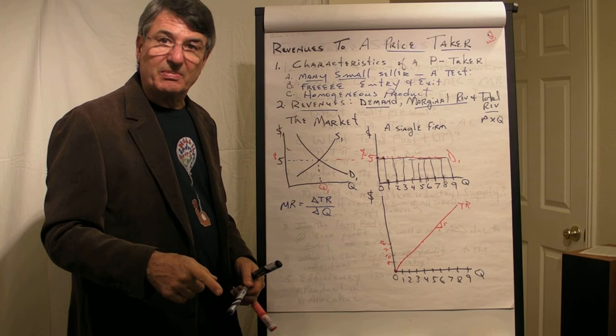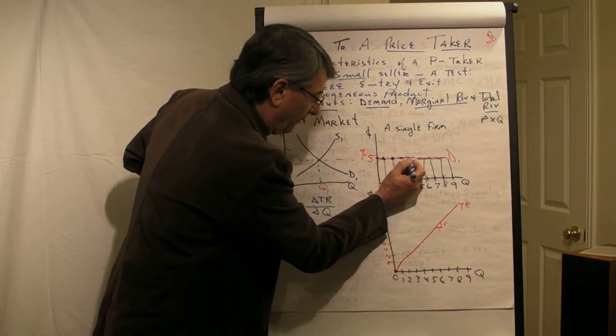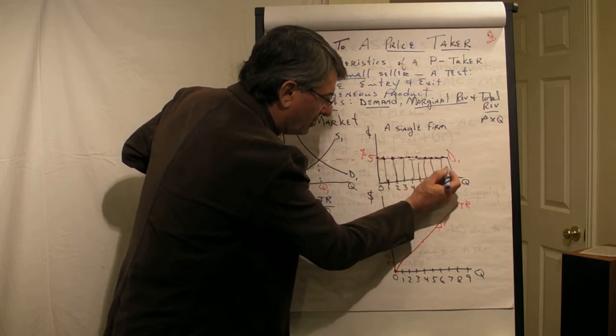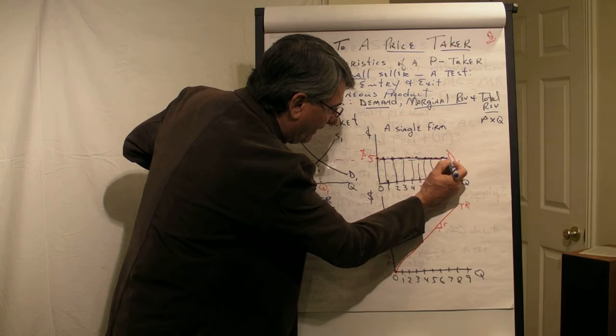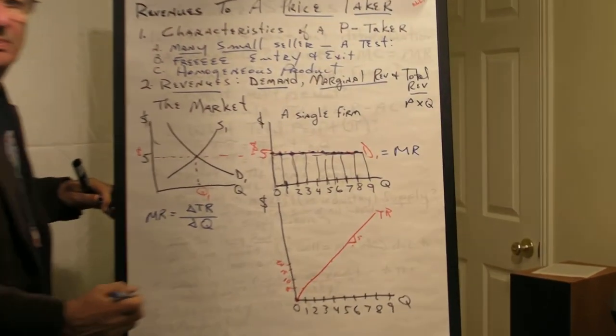their total revenue goes up by five dollars. So this is not only the demand curve for the firm, but every time they sell an additional unit, their total revenue increases by five dollars. So this is also the marginal revenue to a price taker.